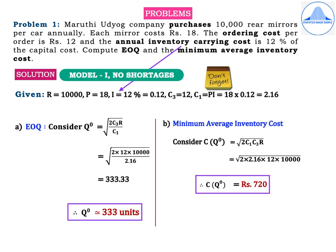Problem 1: Maruti Udyo Company purchases 10,000 rare mirrors per car annually. Each mirror costs Rs.18. The ordering cost per order is Rs.12 and the annual inventory carrying cost is 12% of the capital cost. Compute EOQ and the minimum average inventory cost. Since there is no shortage cost given, this is Model 1 without shortages.